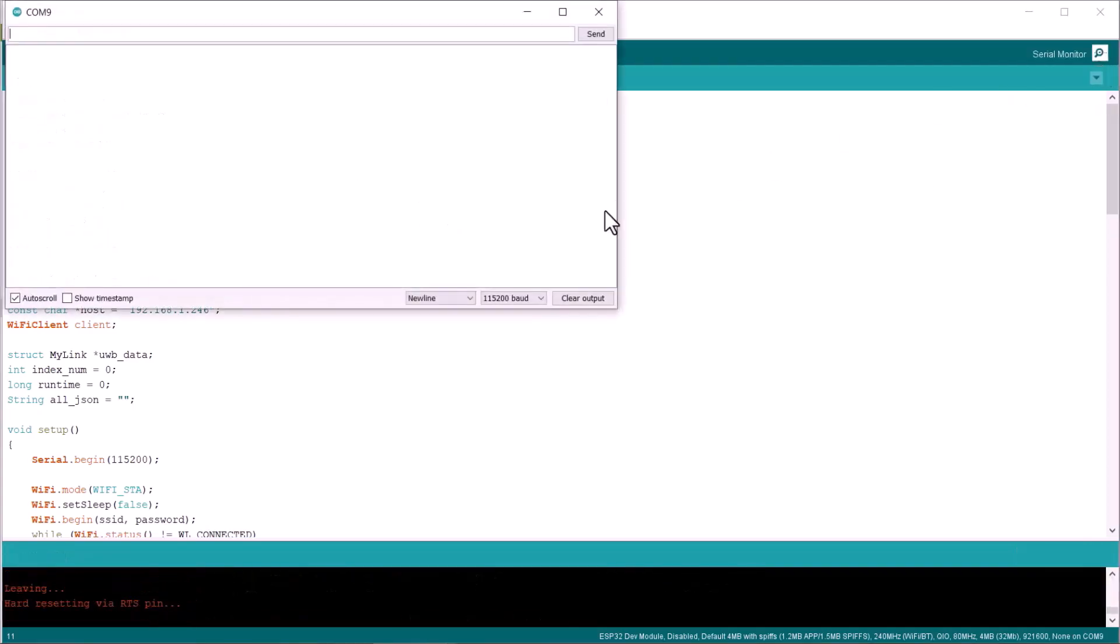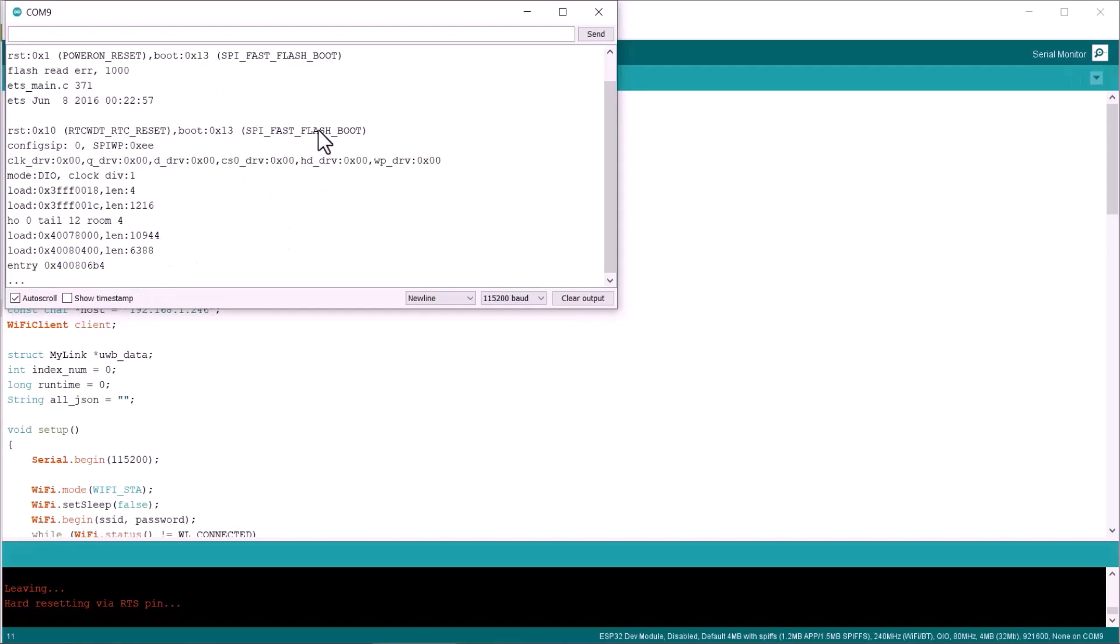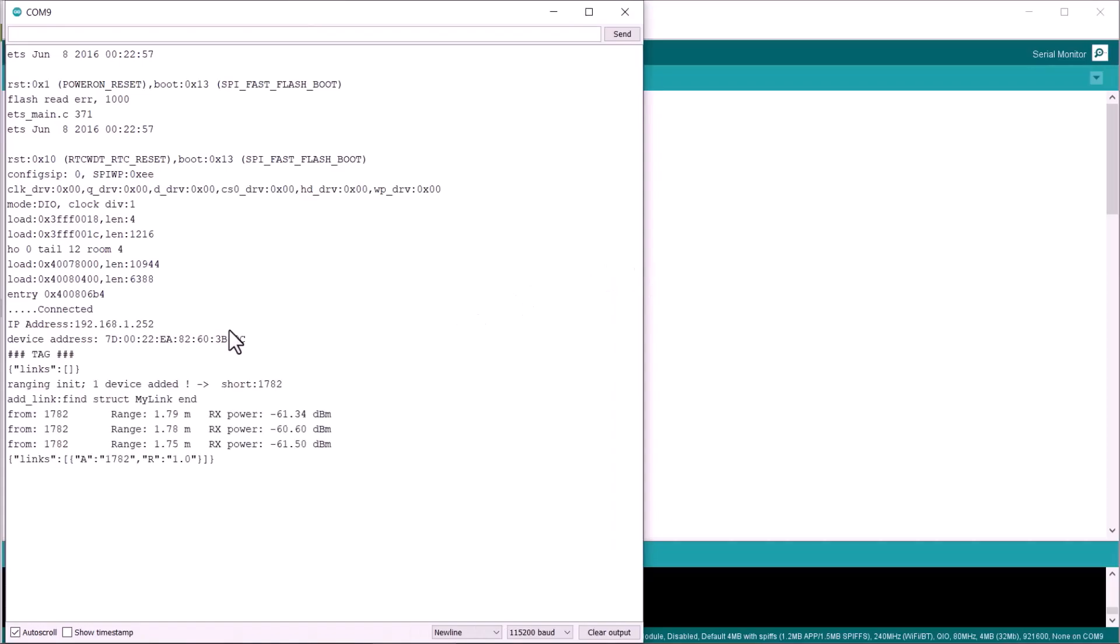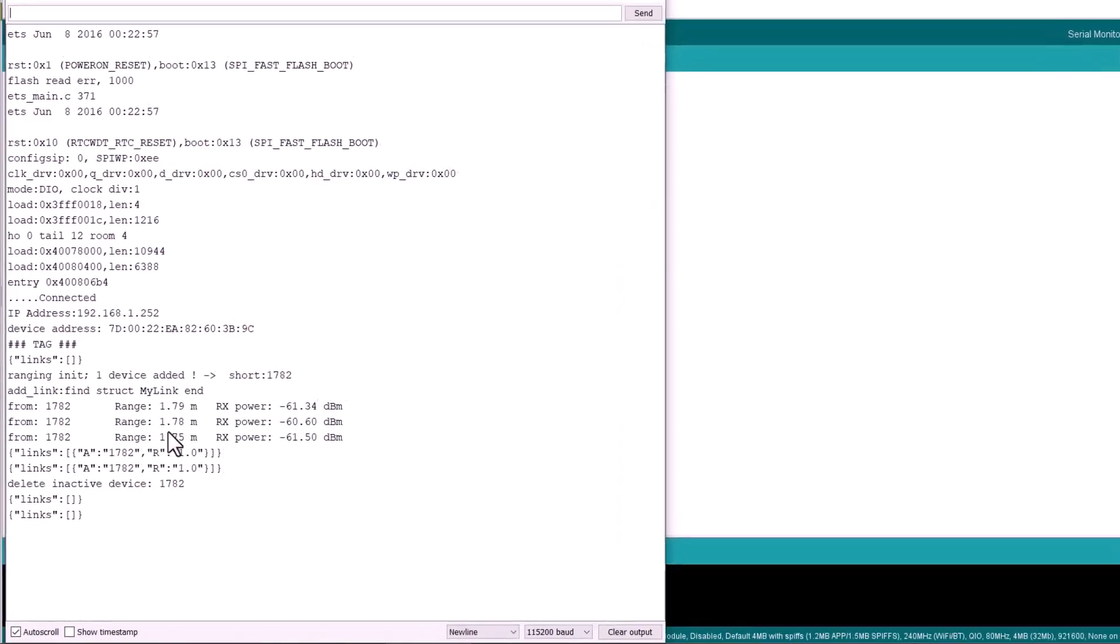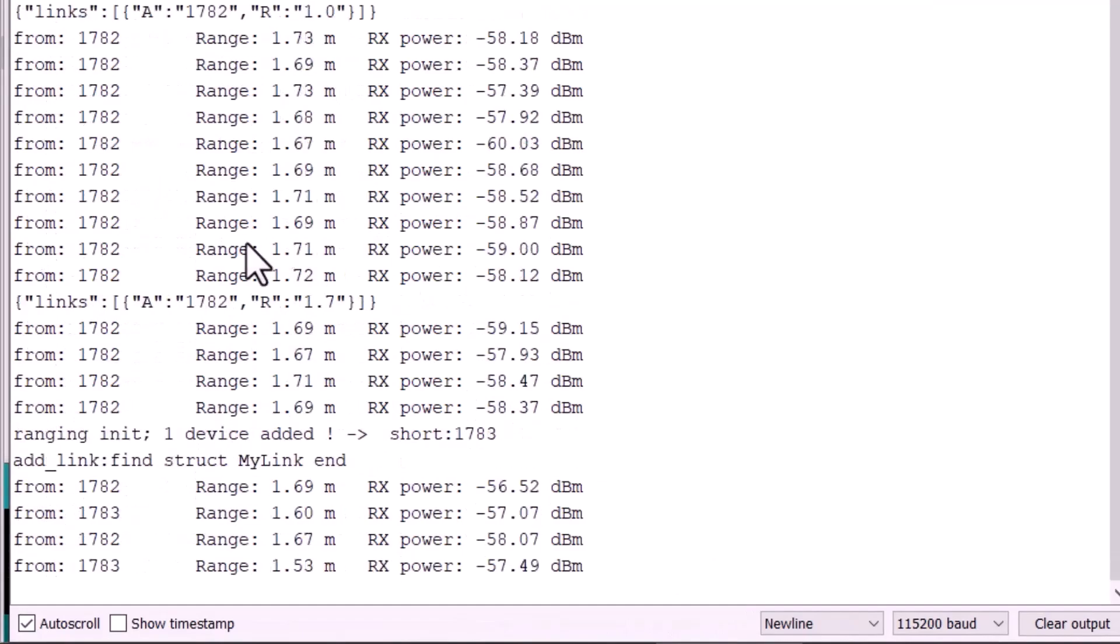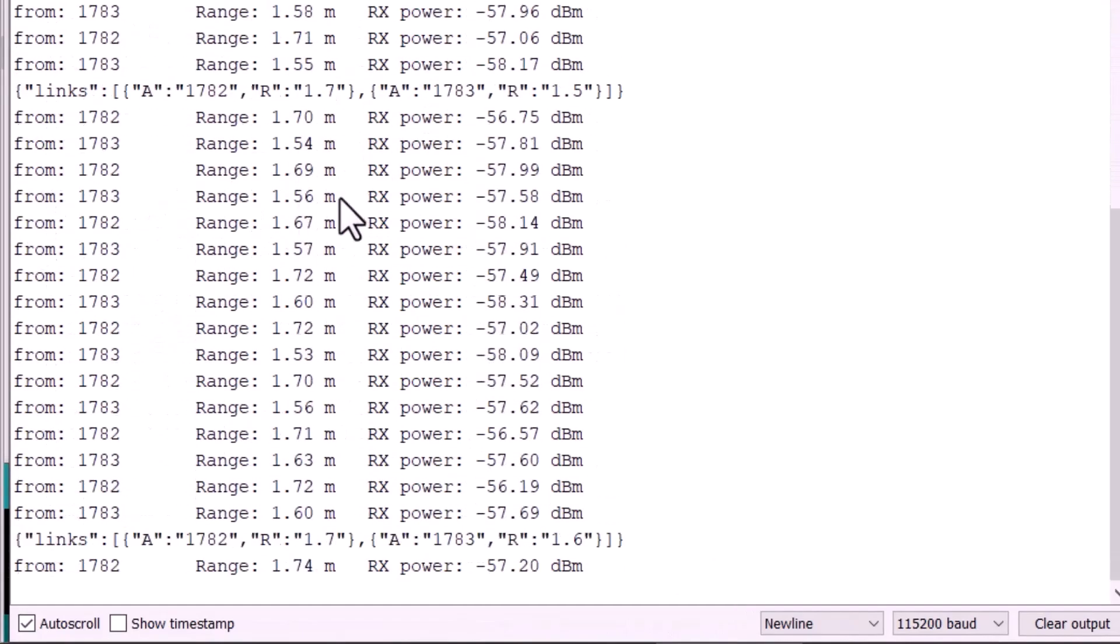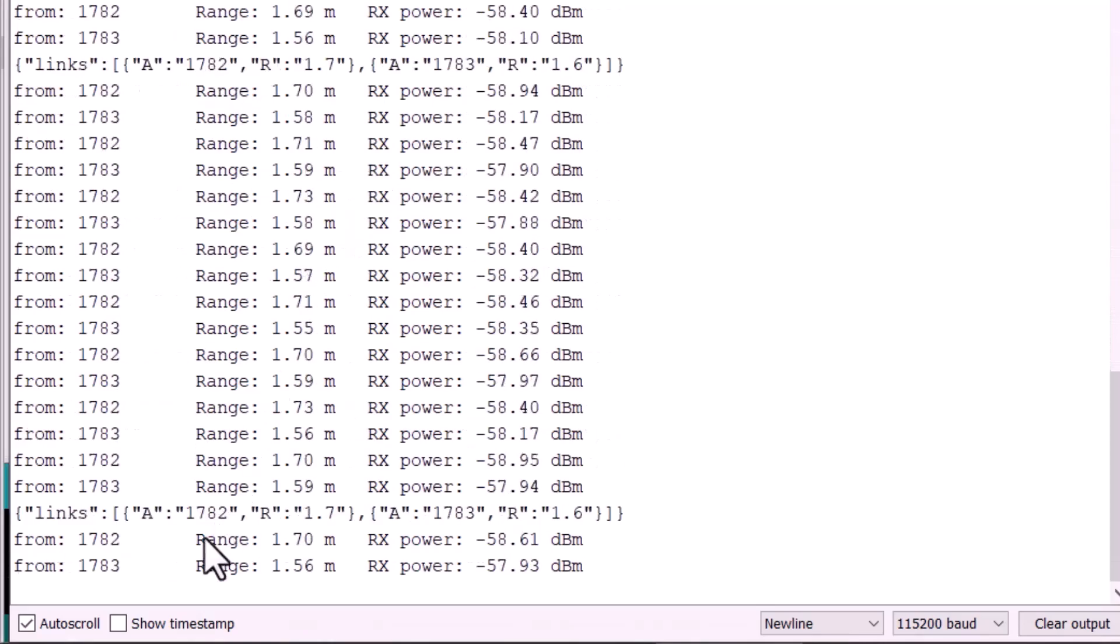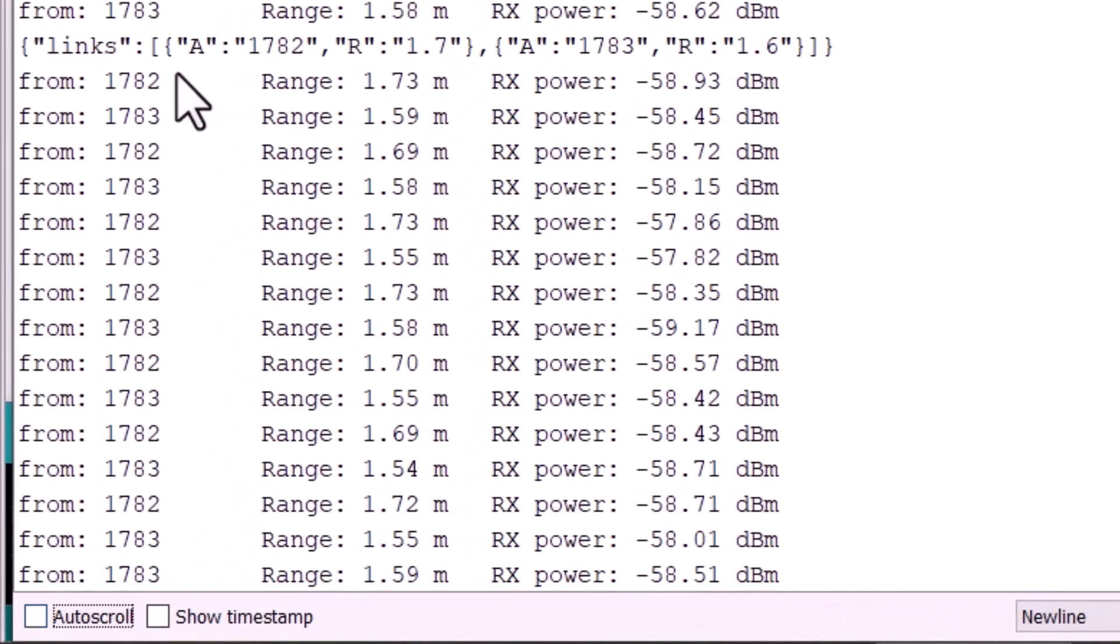Open serial monitor after the code is uploaded. Then press the reset button on the module. The device will connect to the Wi-Fi network and will start displaying the anchor numbers. The ESP32 tag will calculate the distance from both anchors. The obtained string will be in JSON format. Hence, the complete system is working fine.